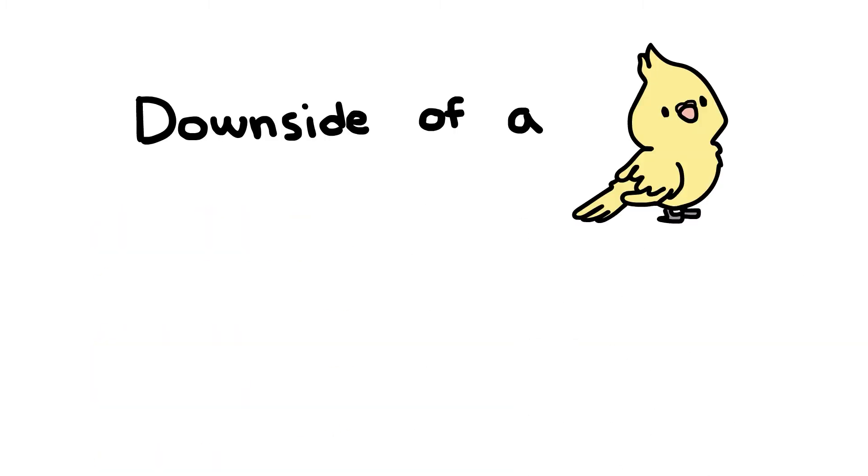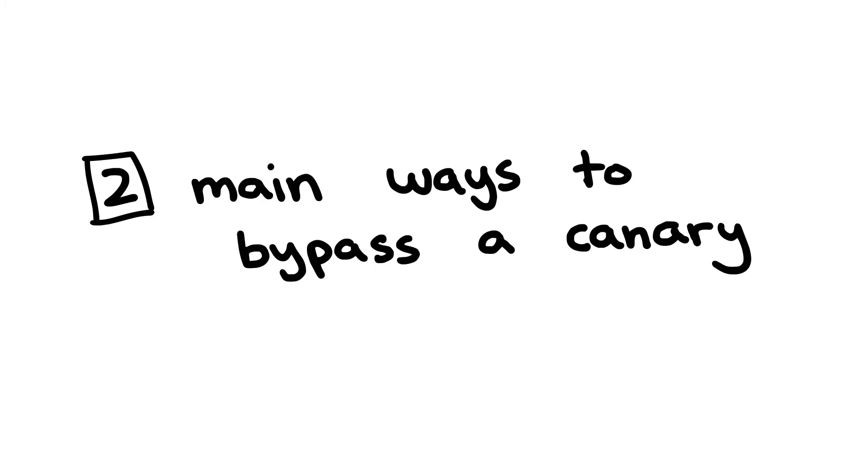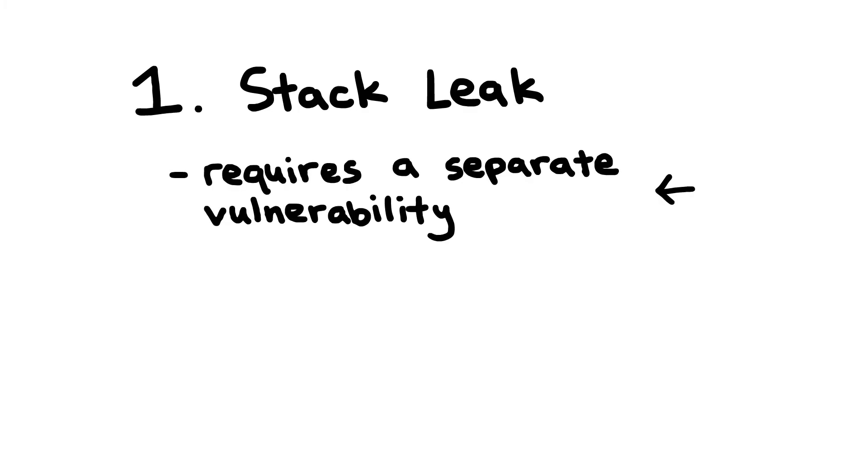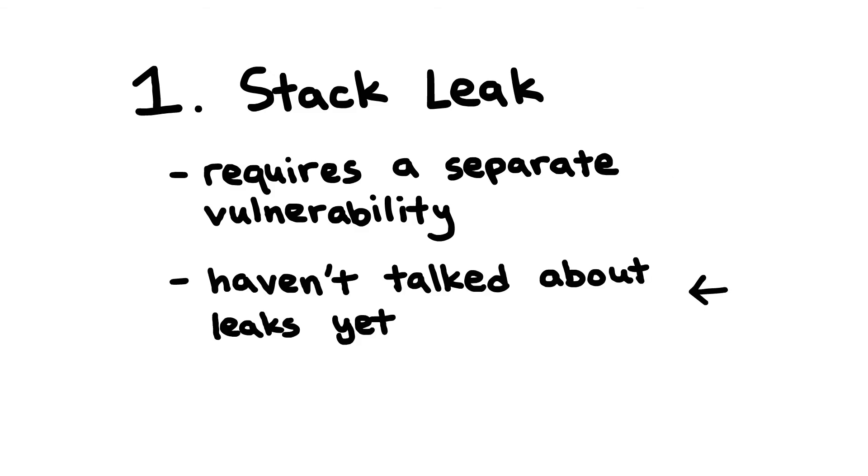The one big downside of a canary is that it's relatively straightforward to bypass. There are two main ways to bypass a canary. The first is to take advantage of what's called a stack leak to get the value of the canary straight from the stack. Once this is done, an attacker just has to write the canary value back in during a buffer overflow to avoid detection. I won't talk much more about this approach because it requires a separate vulnerability and we haven't talked about stack leaks on this channel yet, so don't worry about this too much.